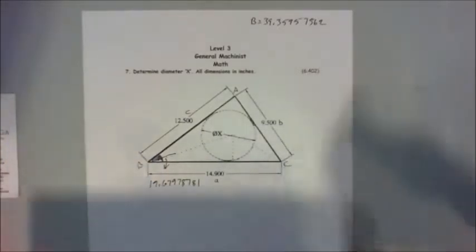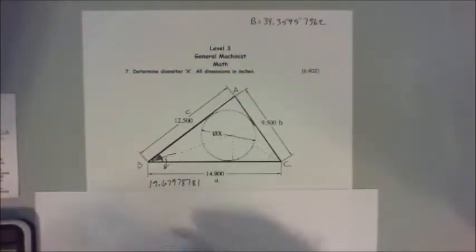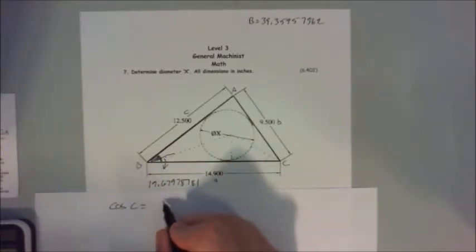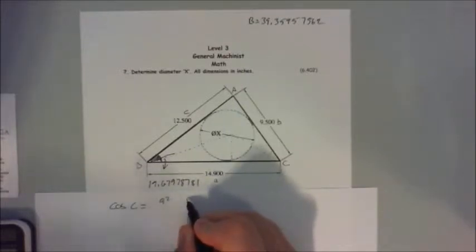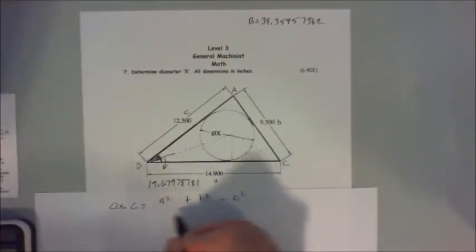With your rounding, you're going to get a slightly different number than me. Don't worry about it. Now we want to find C. So we flip this guy over here. We want to find C, so we're going to use cos C equals a squared plus b squared minus c squared over 2ab.